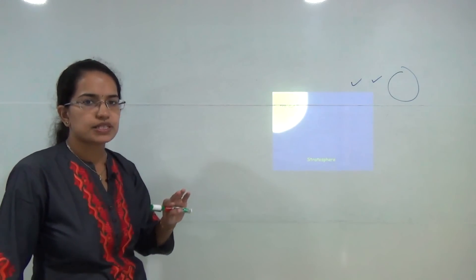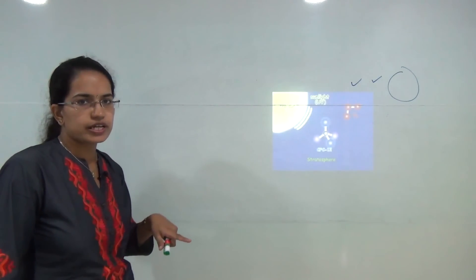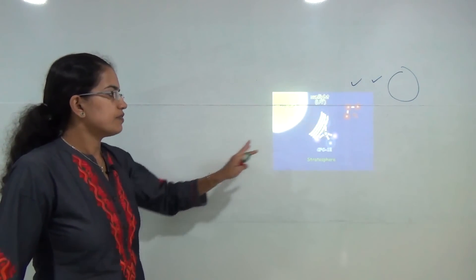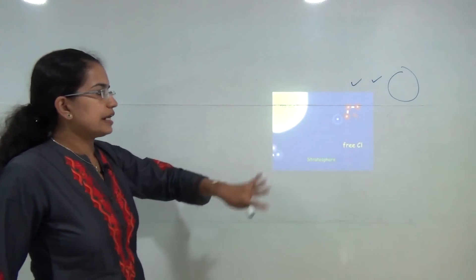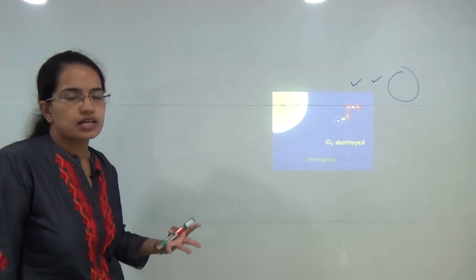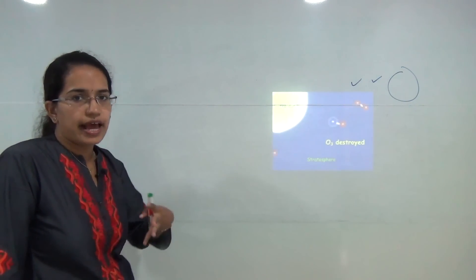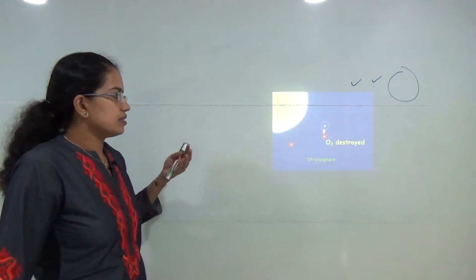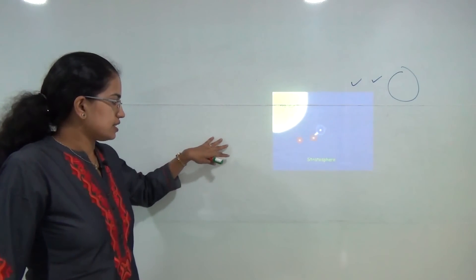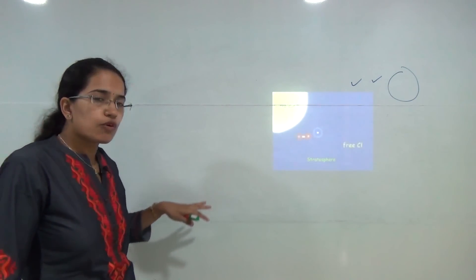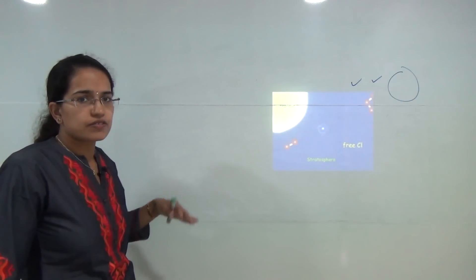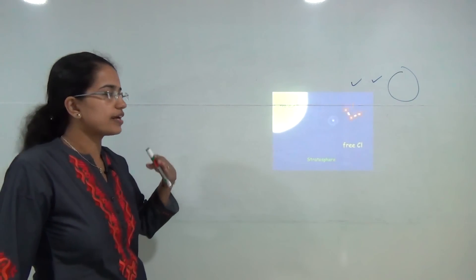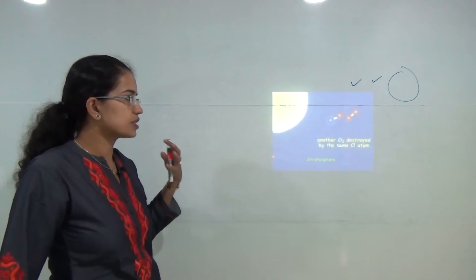When chlorine comes into the picture, it increases the rate of reaction as a catalyst. As a result, if there is creation of an ozone hole, it would take decades and decades to fulfill that gap.